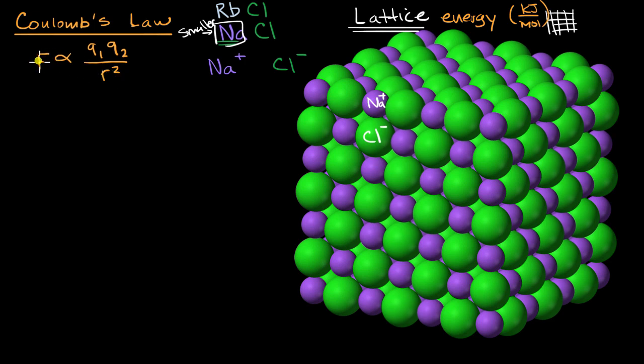So you're going to have stronger Coulomb forces in a lattice of sodium chloride than in a lattice of rubidium chloride. And because the force of attraction is stronger, it's going to take more energy to pull it apart. So because of that, you're going to have a higher lattice energy for sodium chloride than rubidium chloride.